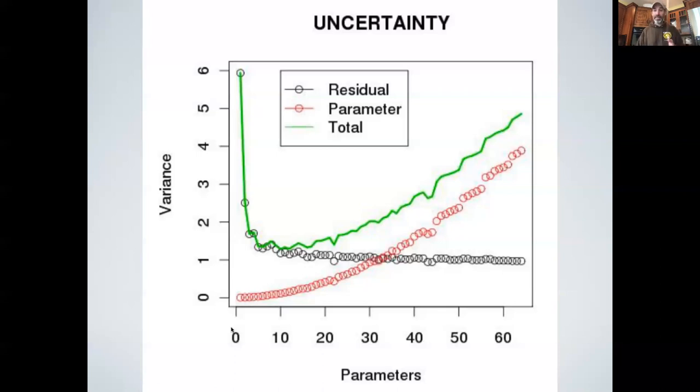But at the same time, I'm trying to estimate a thousand parameters from a thousand data points. My standard error on the parameters goes to infinity. And so in the limit, the residual error just went to zero, but the total error, this combination of parameter error and residual error just went to infinity. And so it's clearly not a good fitting model.